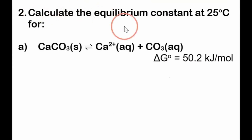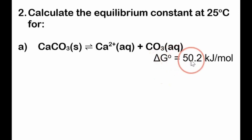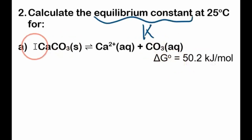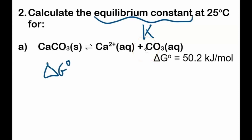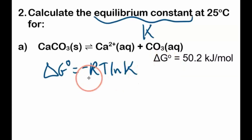For problem two: calculate the equilibrium constant K at 25°C. We have a chemical equation and a standard change in Gibbs free energy of 50.2 kJ/mol. We actually don't need the chemical equation for this one. We're given ΔG° and we want K, so we're going to use the equation but rearrange it to solve for K.